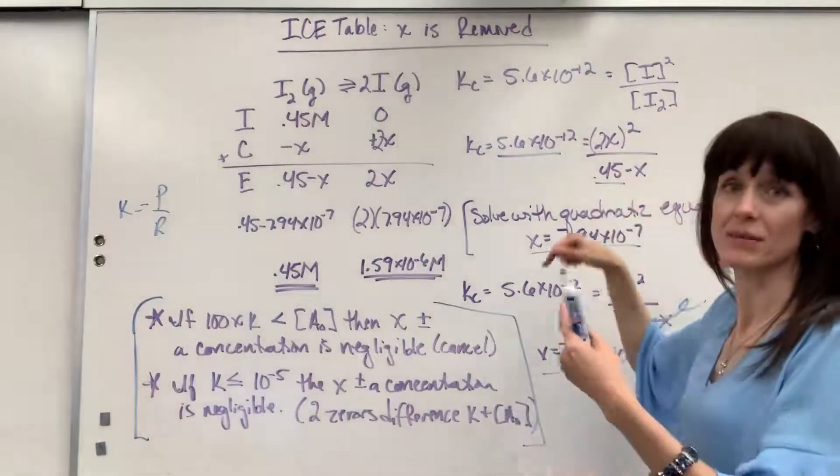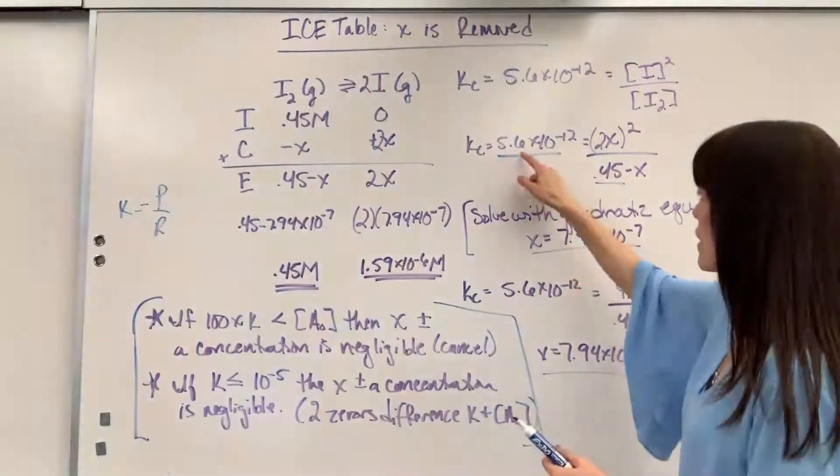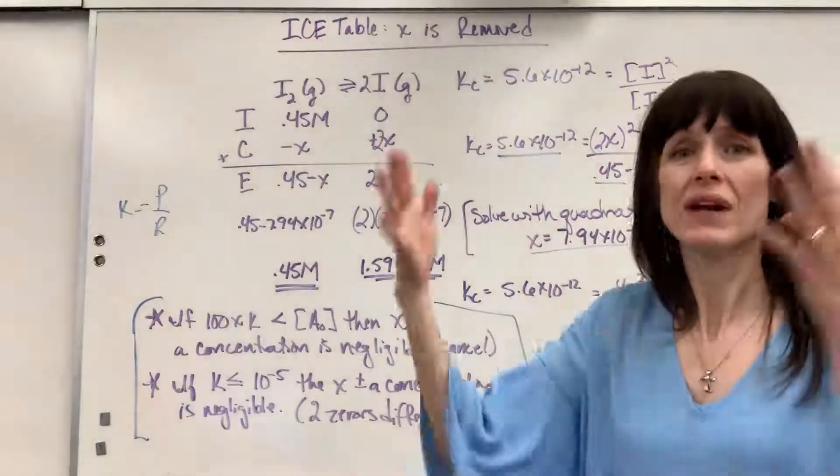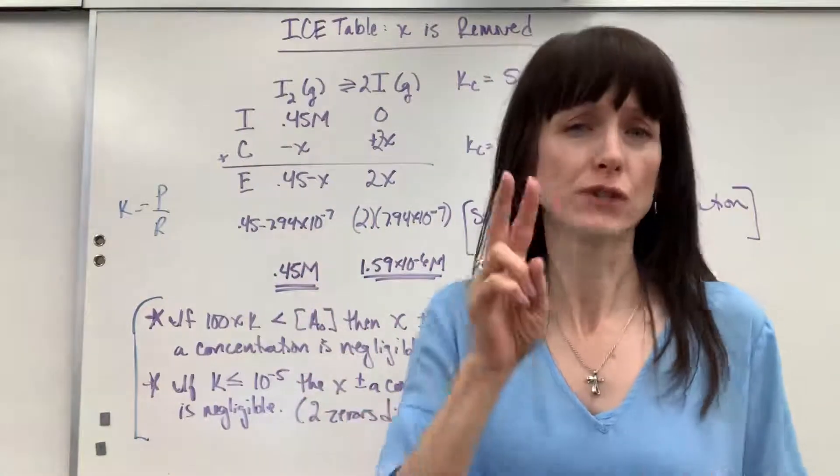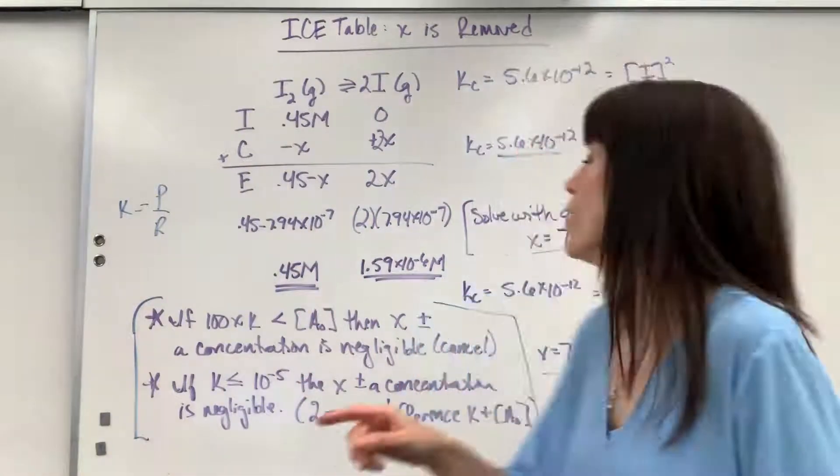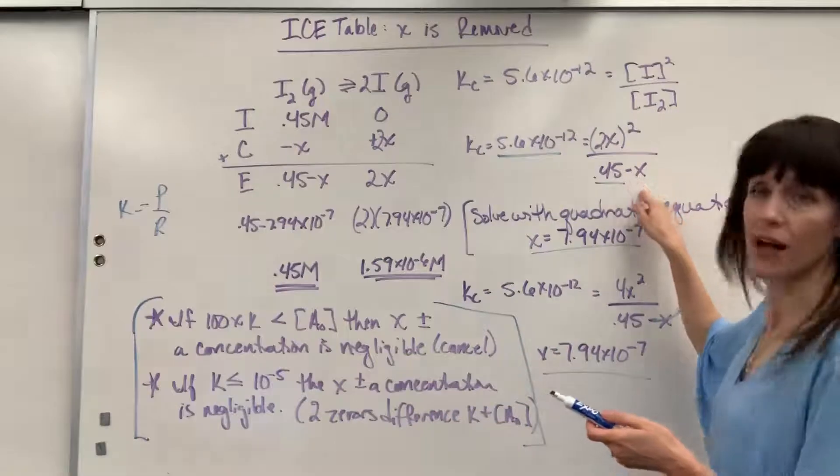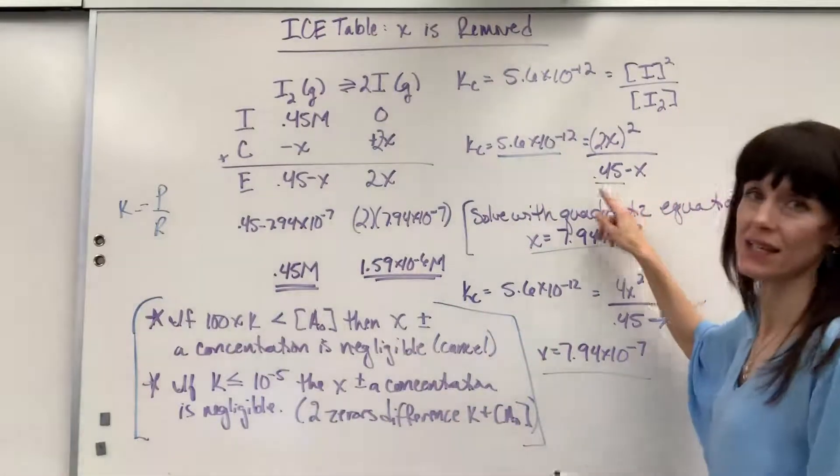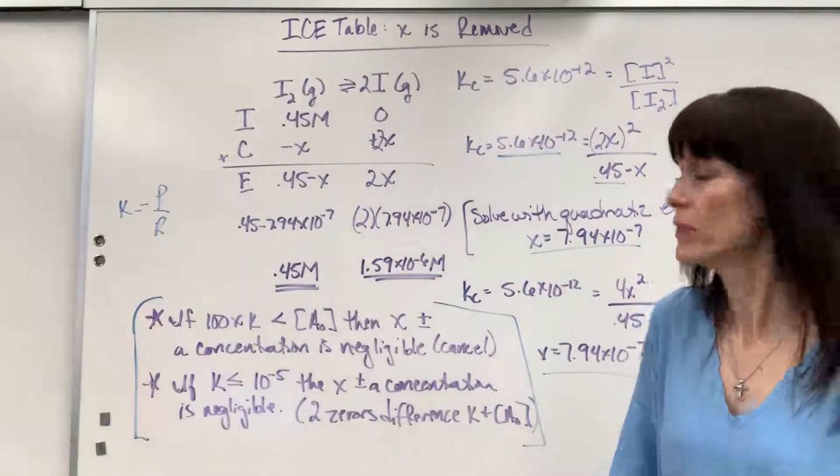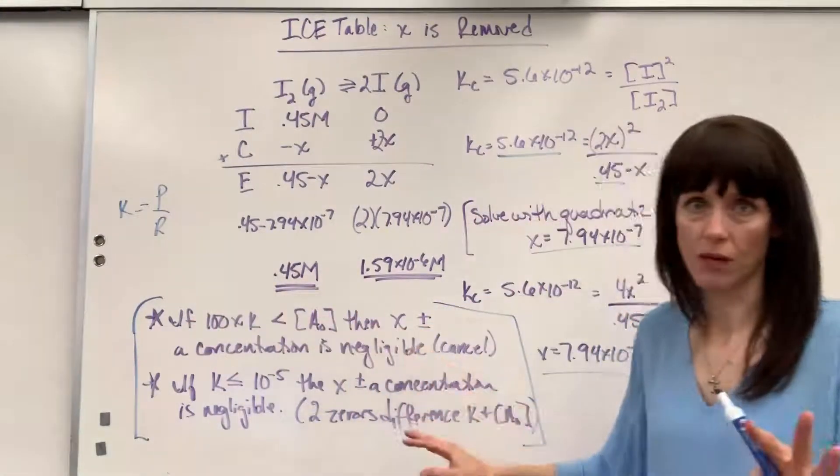This would be 4.5 times 10 to the minus 1. This is 5.6 times 10 to the minus 11. We have, or 12, excuse me. There's 11 zeros difference. If you even have two zeros difference, this x, that value, when you solve for it, is going to be so small that when you subtract, it doesn't change the initial concentration.